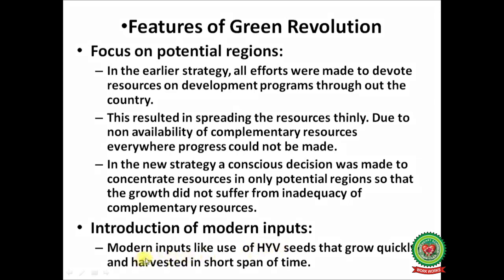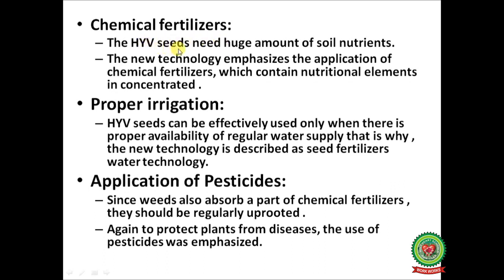Introduction of modern inputs: HYV seeds grow quickly and can be harvested in a short span of time. Chemical fertilizers are emphasized because HYV seeds need huge amounts of soil nutrients, which chemical fertilizers provide in concentrated form. Proper irrigation is essential — HYV seeds can be effectively used only when regular water supply is available, which is why the new technology is described as seed-fertilizer-water technology. The use of pesticides was also emphasized since weeds absorb a part of chemical fertilizers and plants need protection from diseases.